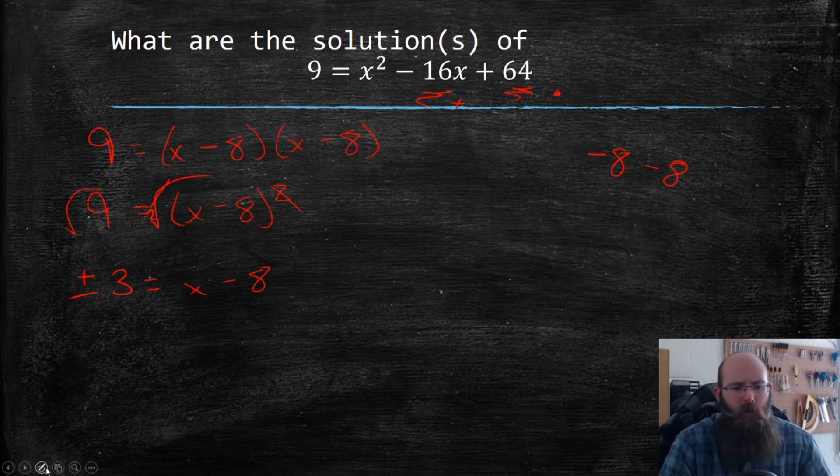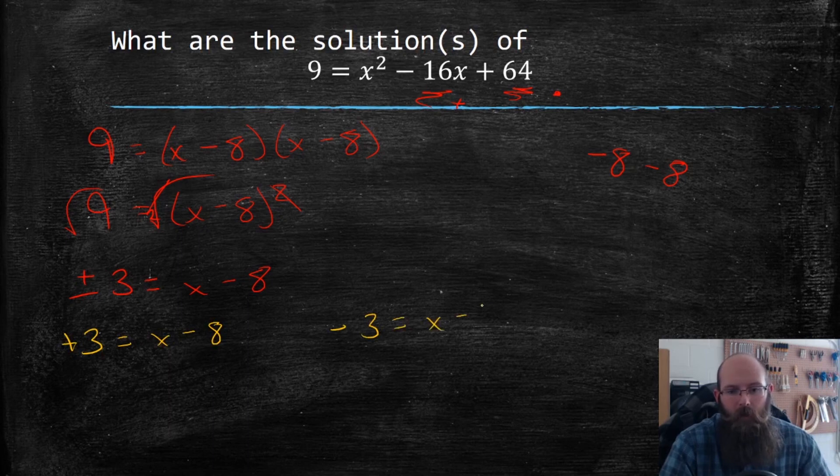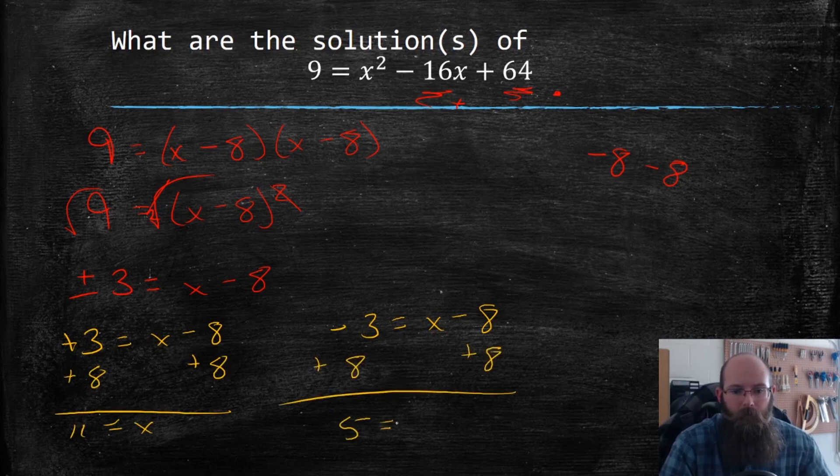I'm going to split this up into two different cases. I'm going to change my color for that. Let's do this orange color. So I have a positive three equals x minus eight, and I have a negative three equals x minus eight. And I'm going to solve for x for both of these. So I end up with x equaling 11 and x equaling five, but I need to check that.